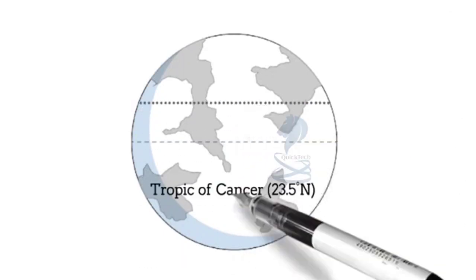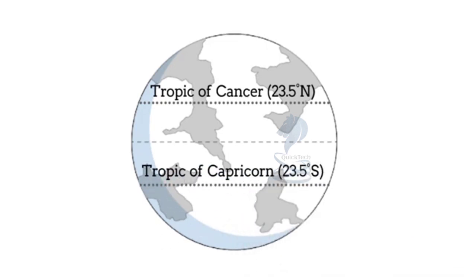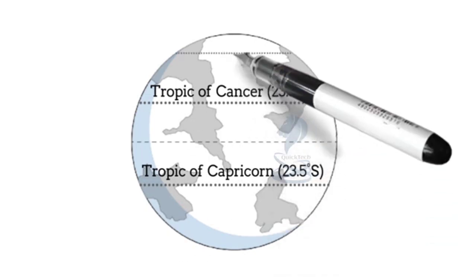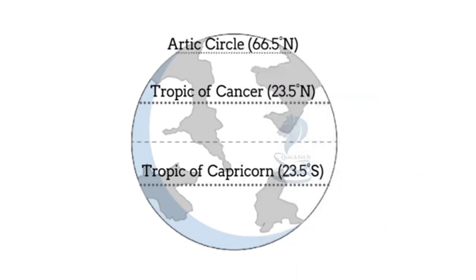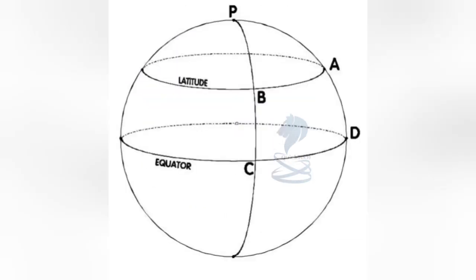Examples of small circles that are parallels of latitude include: the Tropic of Cancer at 23.5 degrees north, the Tropic of Capricorn at 23.5 degrees south, the Arctic Circle at 66.5 degrees north, and the Antarctic Circle at 66.5 degrees south. Here, north denotes the northern hemisphere and south denotes the southern hemisphere.